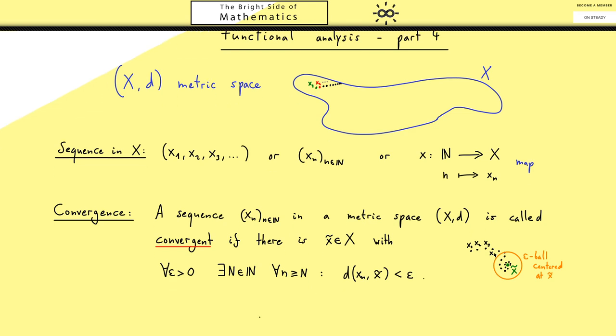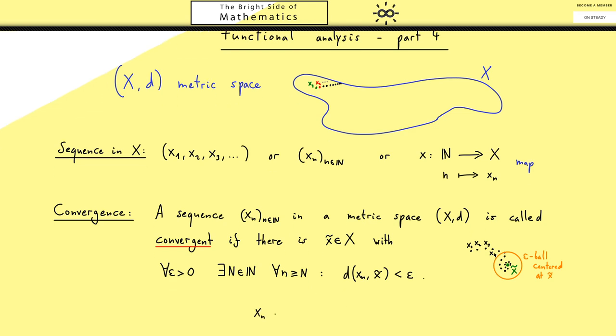In this case we then write xn tends to x tilde if N goes to infinity. Alternatively we also use the limit notation. So we write limit N to infinity of xn is equal to x tilde.